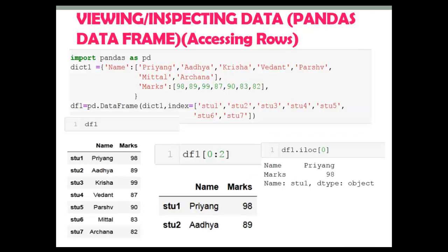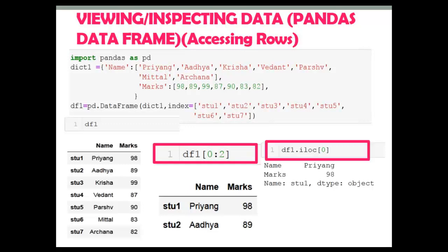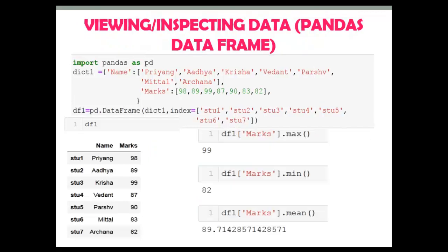For accessing rows, you can use slicing or the iloc method. I will explain the iloc and loc methods in the next video. Here I have just covered some important information about the pandas DataFrame.